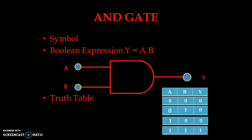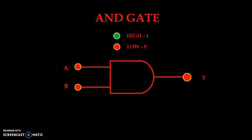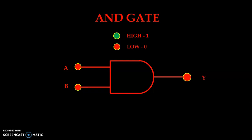Let us simulate our AND gate. As per the truth table, we will give all the possible inputs and check the output. Green indicates a high signal and red indicates a low signal. In this condition we have given A and B both low, so you can observe the output. This condition is 0,0 so we are getting 0 output.